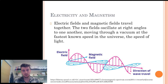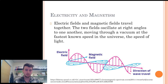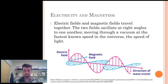This is because electricity and magnetism are inextricably linked to each other — you can't have one without the other. A moving electric charge creates a magnetic field and vice versa. The electric field and magnetic field travel oscillating at right angles to one another, moving through a vacuum at the fastest known speed in the universe, the speed of light, as you can see in the diagram in this slide.